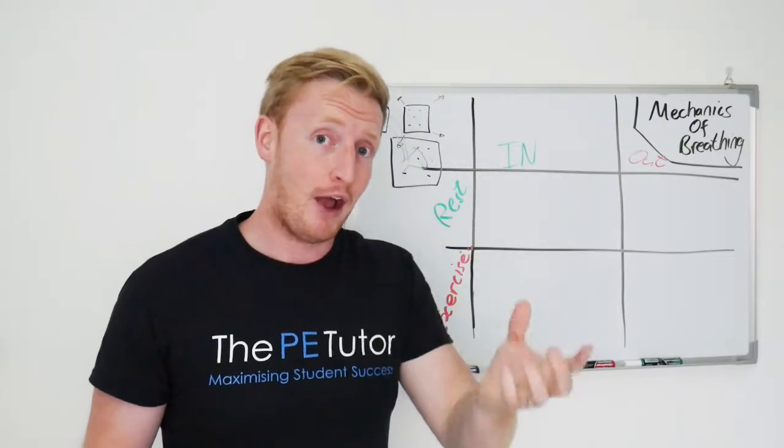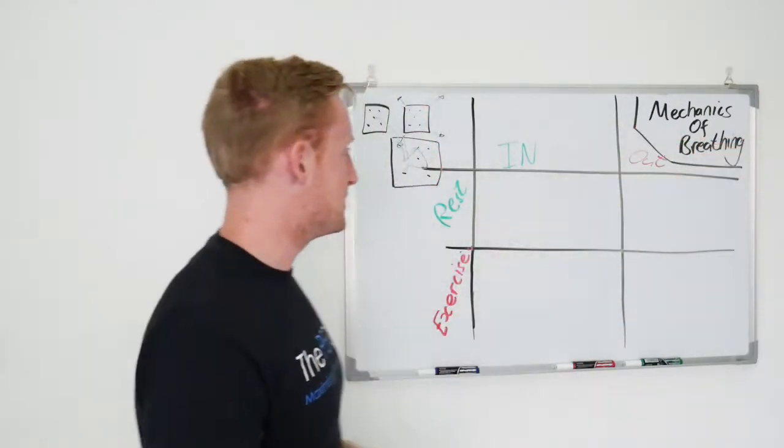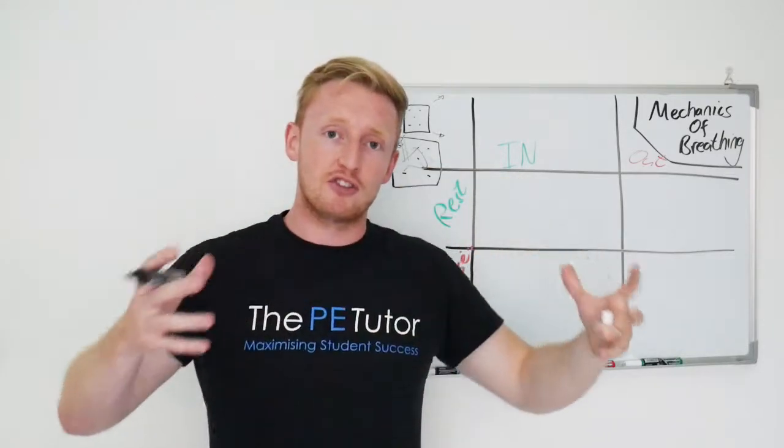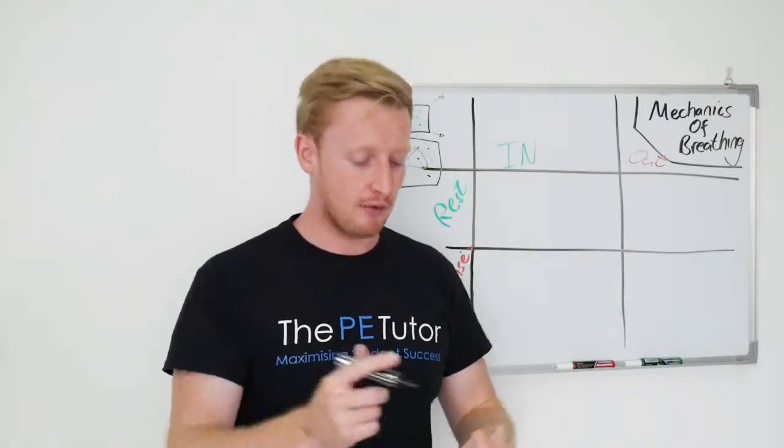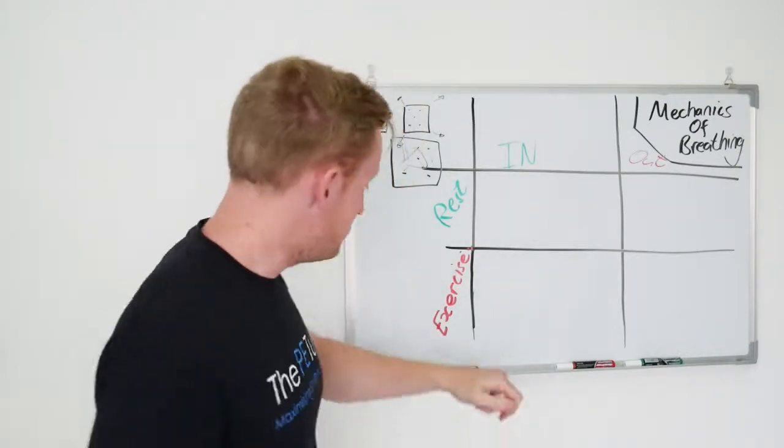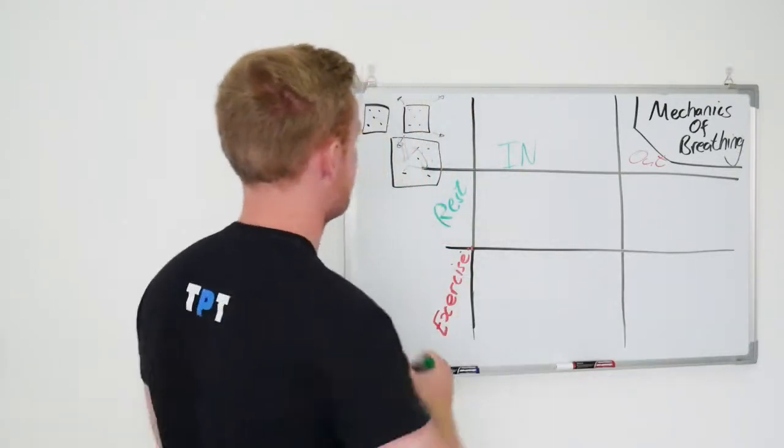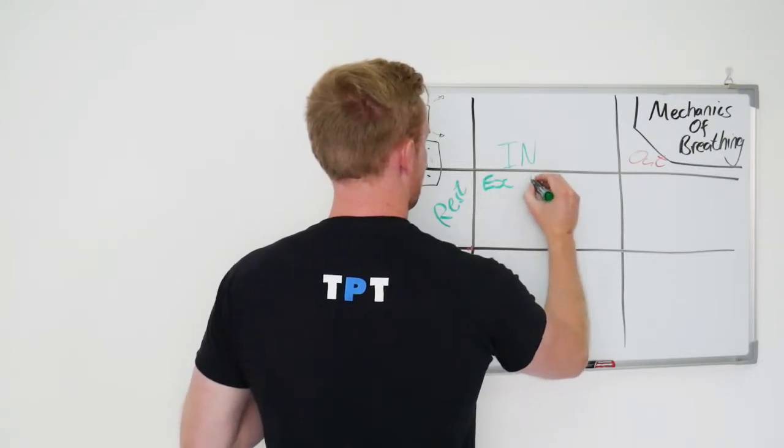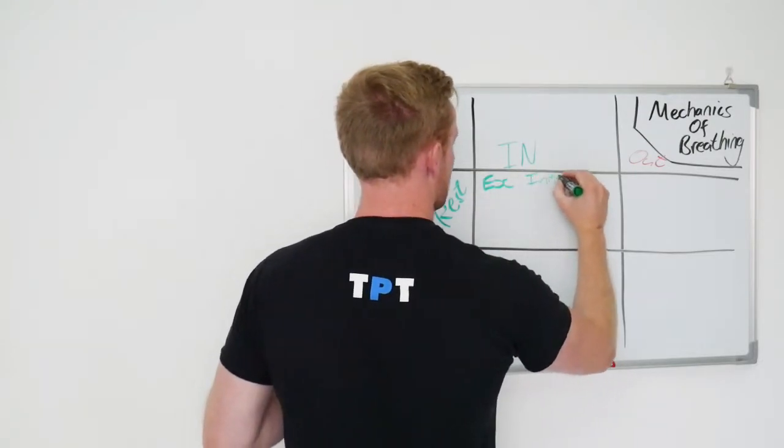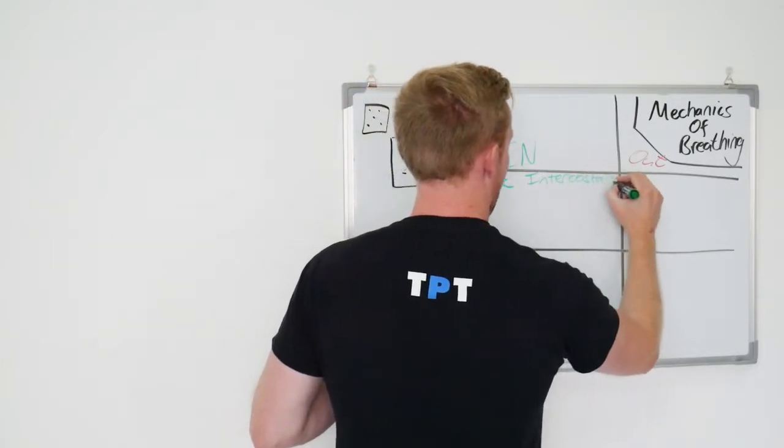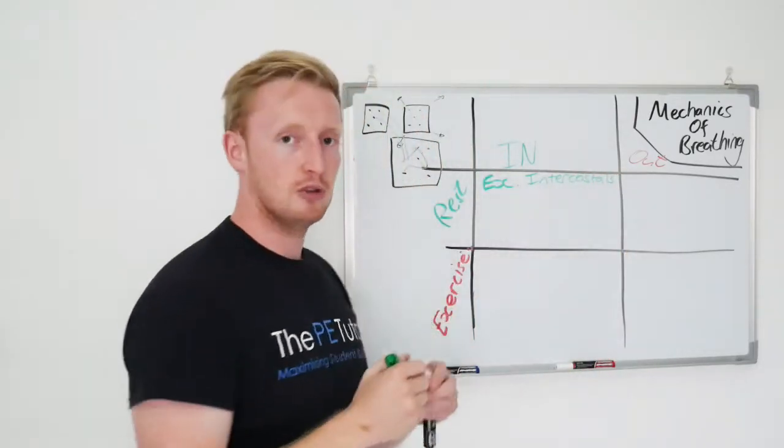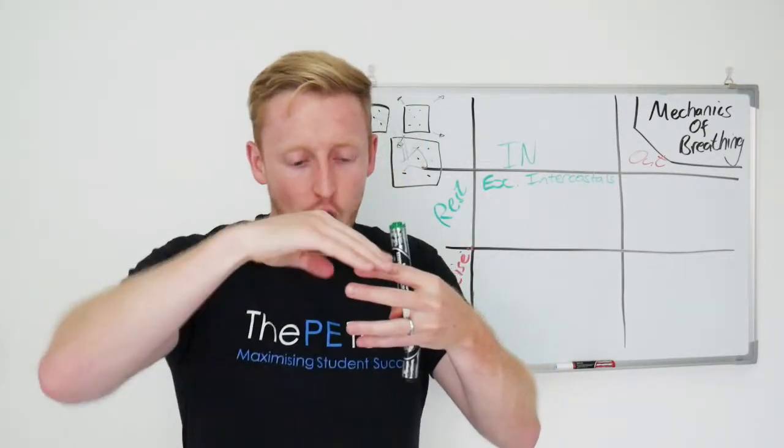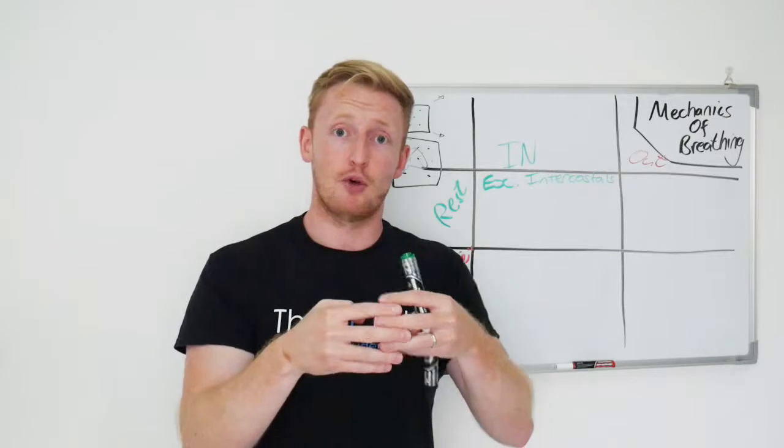The question is how do we do that? That's where the mechanics of breathing comes in. So at rest all we need to do is create a slow gradual small pressure difference. The muscles that we can use to achieve this are our external intercostals. External intercostal muscles. These are the muscles that line and lie over the top of our ribs or our rib cage.